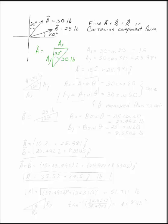So we can say AX is 30 times sine of 30, and AY is 30 times cosine of 30. And what you end up with for the vector A is 15I plus 25.981J.